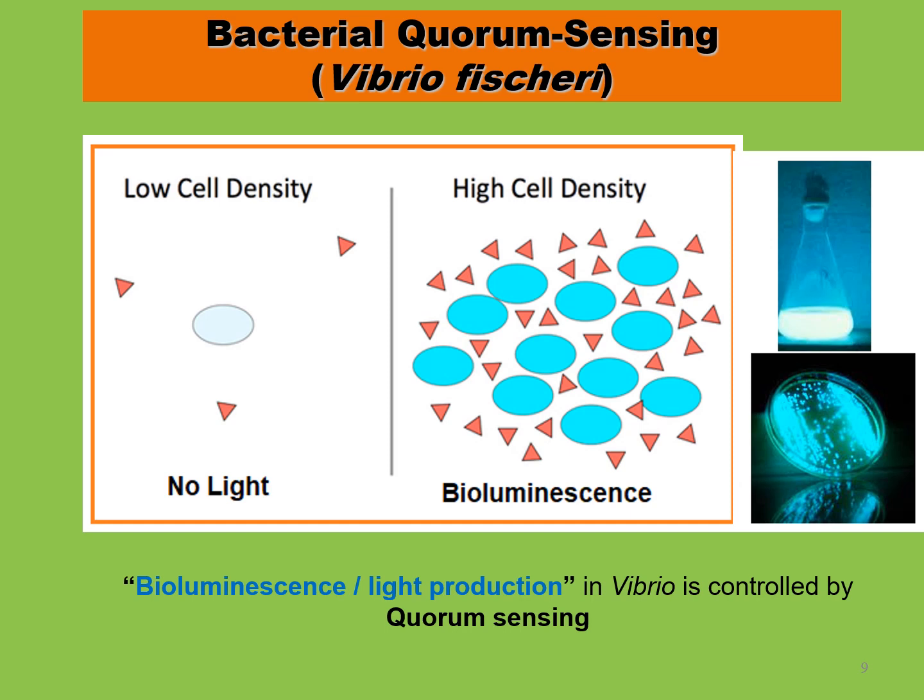The bioluminescent light production in Vibrio is controlled by quorum sensing. You can see here that if there is a low cell density — only few bacteria are present — then there is no light production. However, when these bacteria produce signal molecules and reach the threshold concentration of signal molecules at high cell density, then there is production of light.